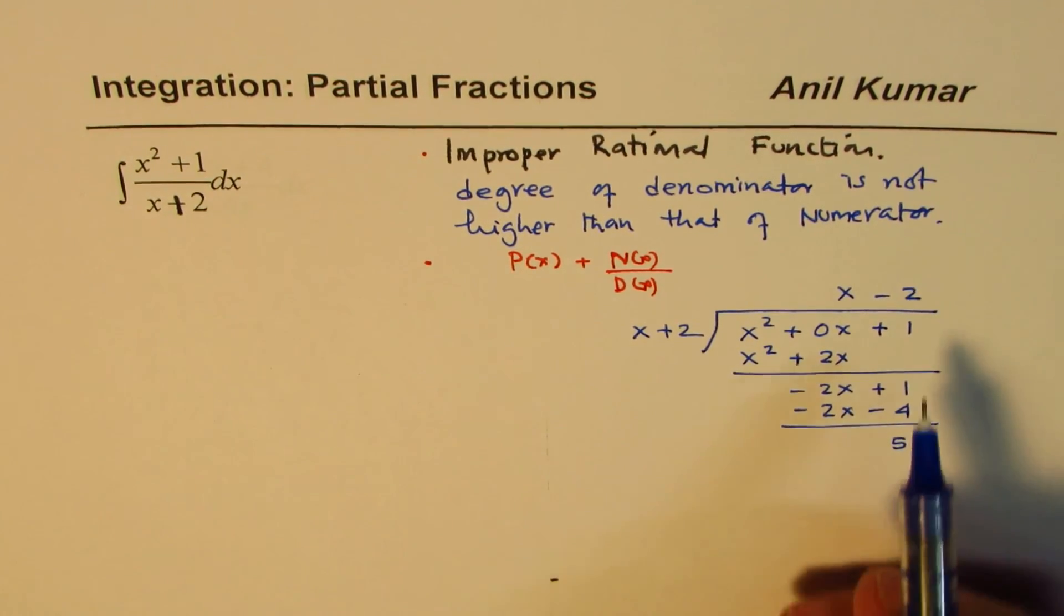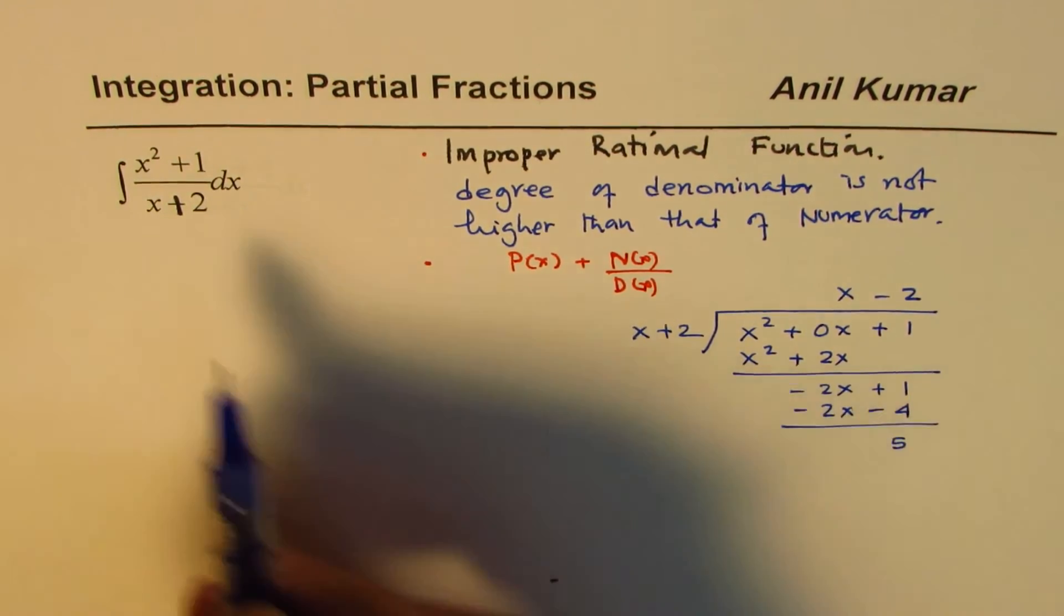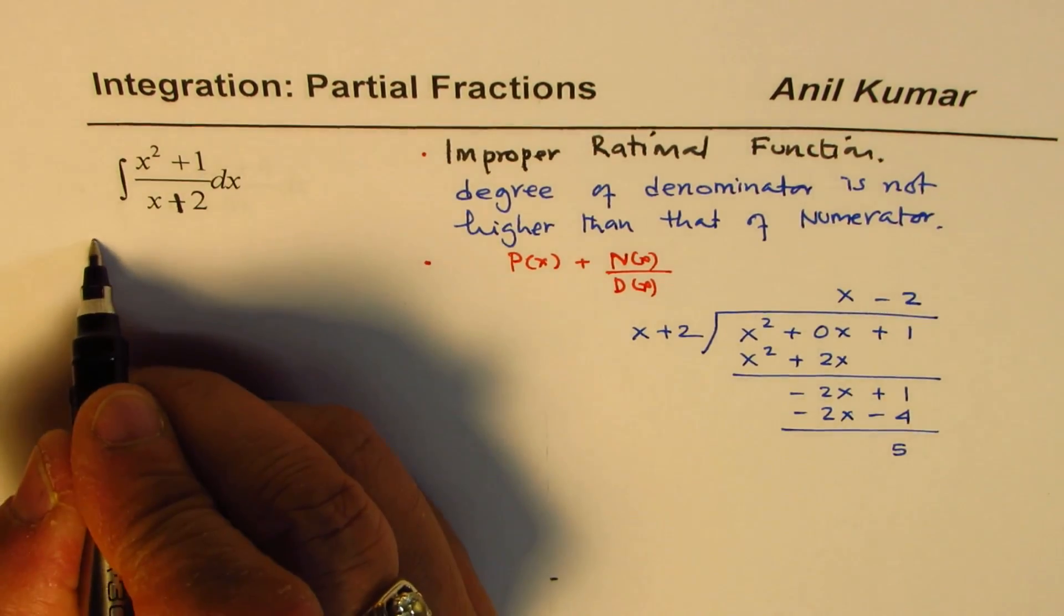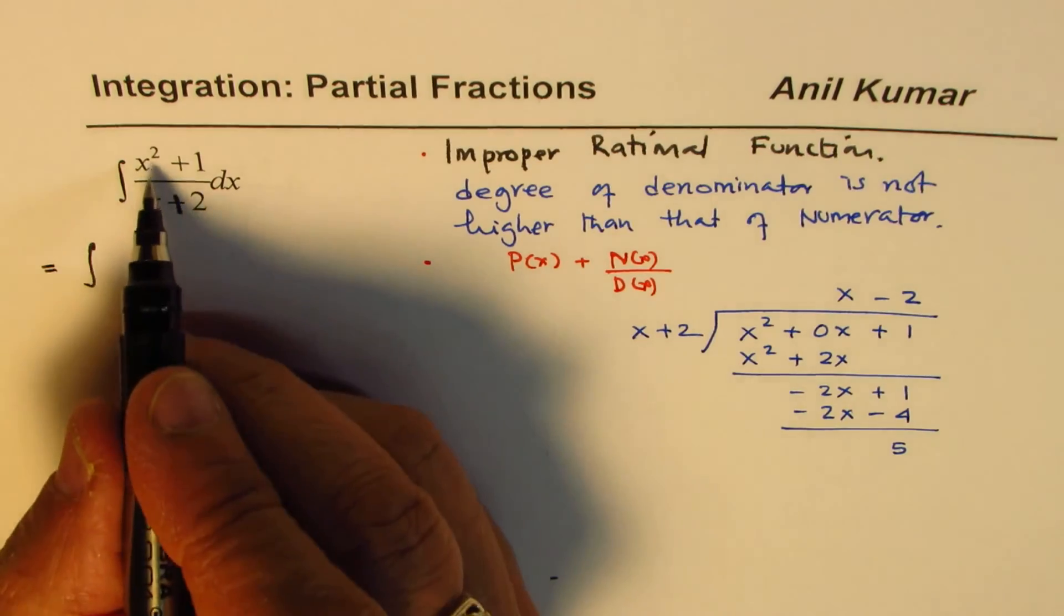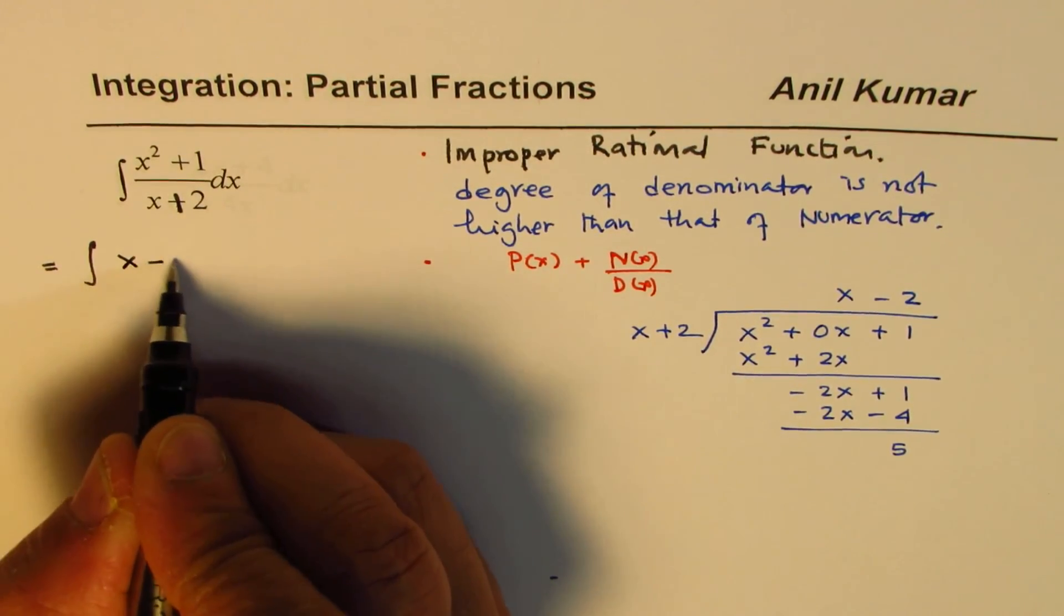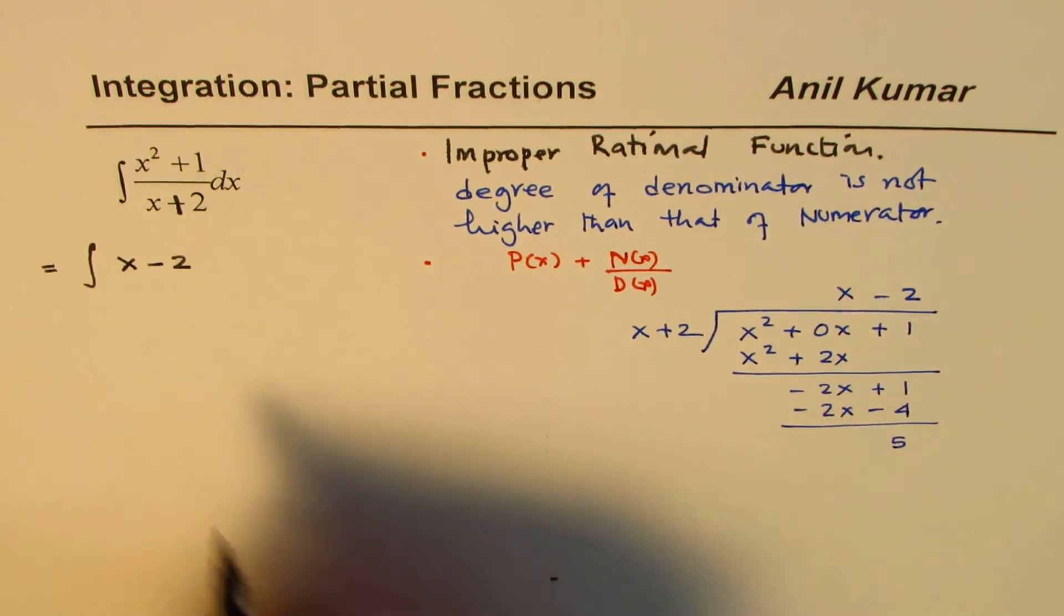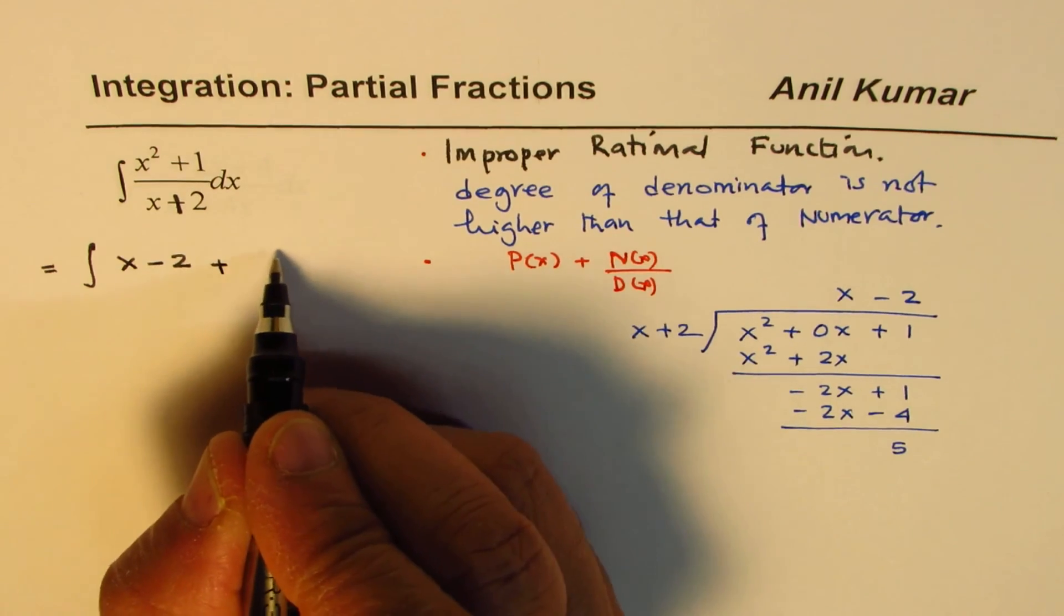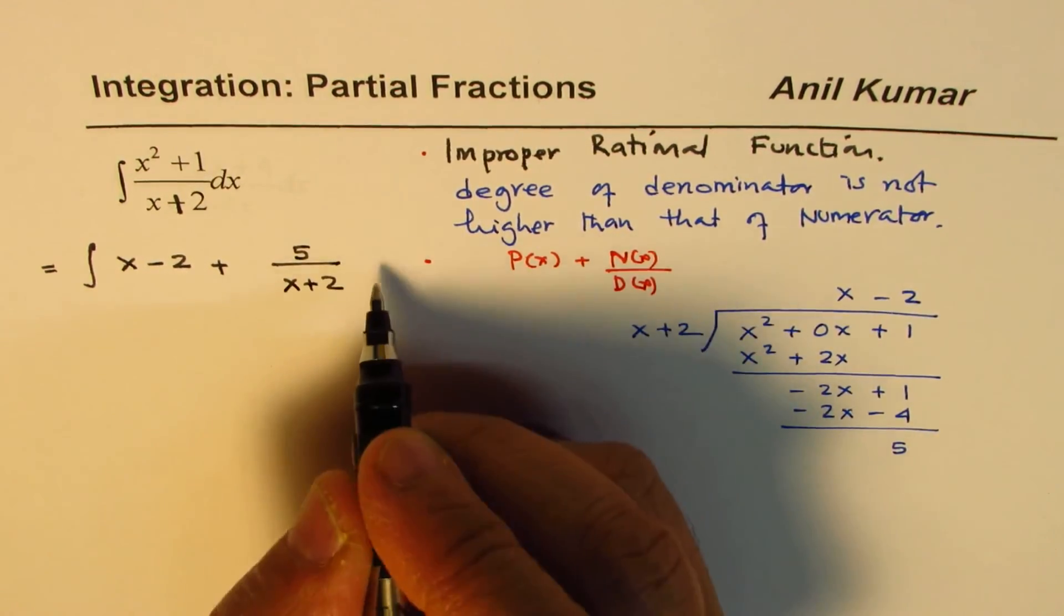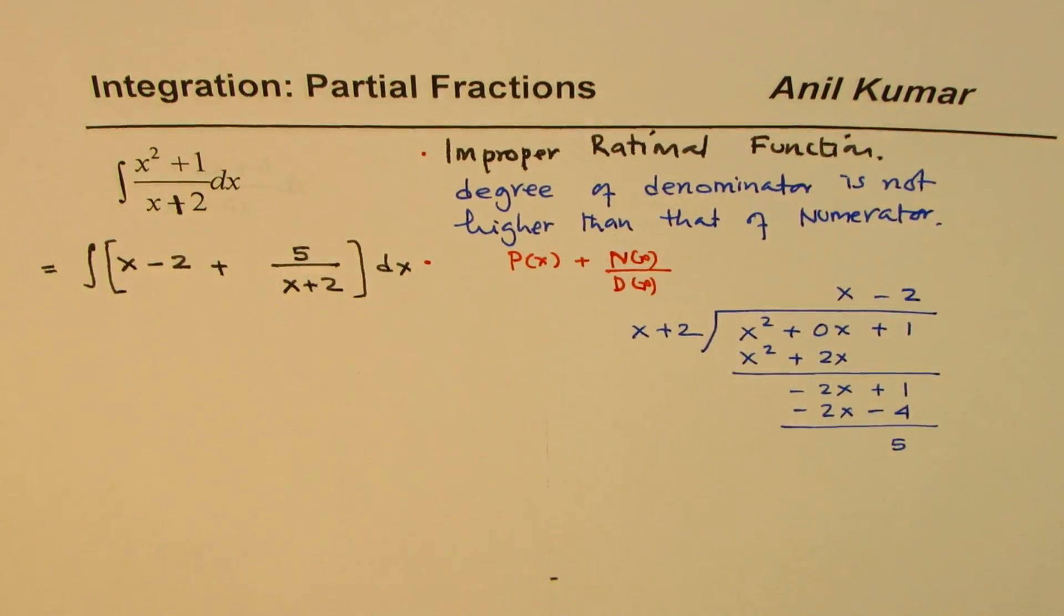So that is what the remainder is. Since this is the remainder, we could write the function as equal to integral of x minus 2, that is the quotient, and then plus 5 over x plus 2 dx. So that is the first step.